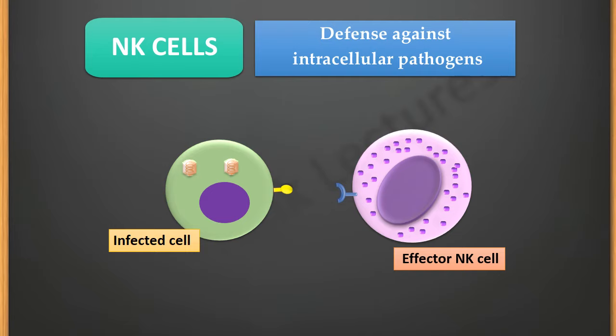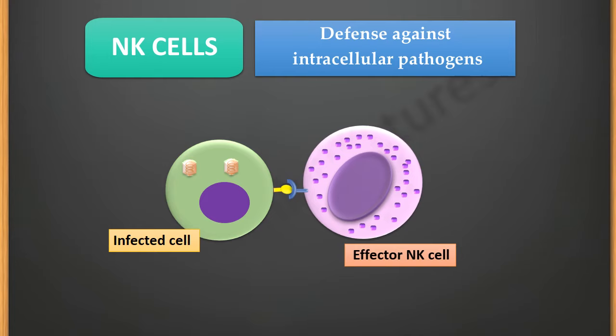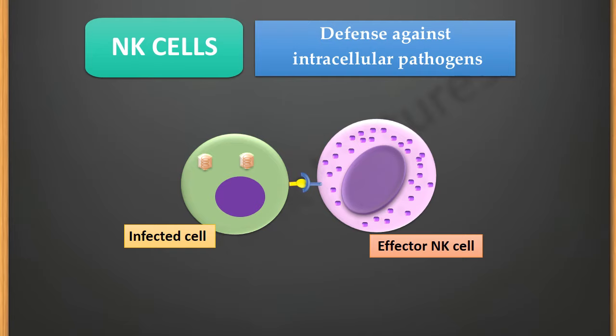These effector NK cells have the capability to recognize cells which are infected by viruses. For this, they use specific receptors present on their surface which recognize the altered proteins on the surface of the infected cell. The NK cell makes contact with the infected cell through these receptors. Once contact has been established, the granules of the effector NK cell diffuse with the plasma membrane of the NK cell and are shot out onto the outer surface of the target cell.